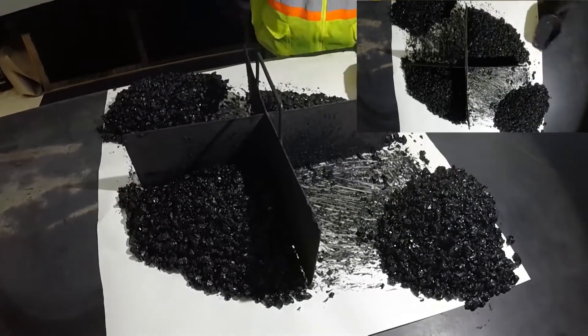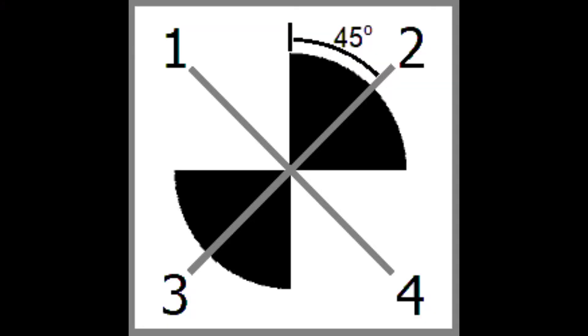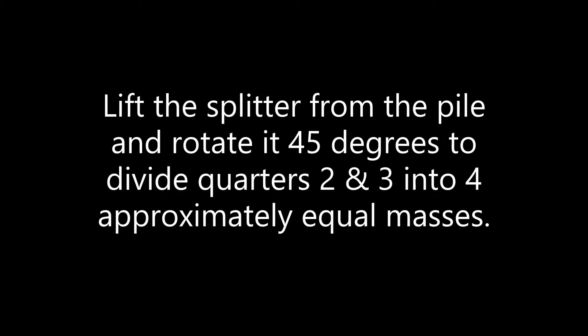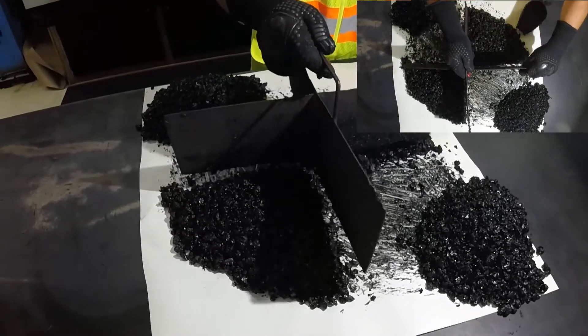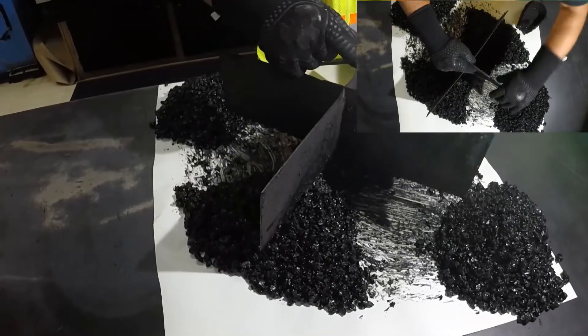After removing the materials from quarters one and four, lift the splitter from the pile and rotate it 45 degrees. Insert the splitter into the remaining quarters to divide them into approximately four equal masses.